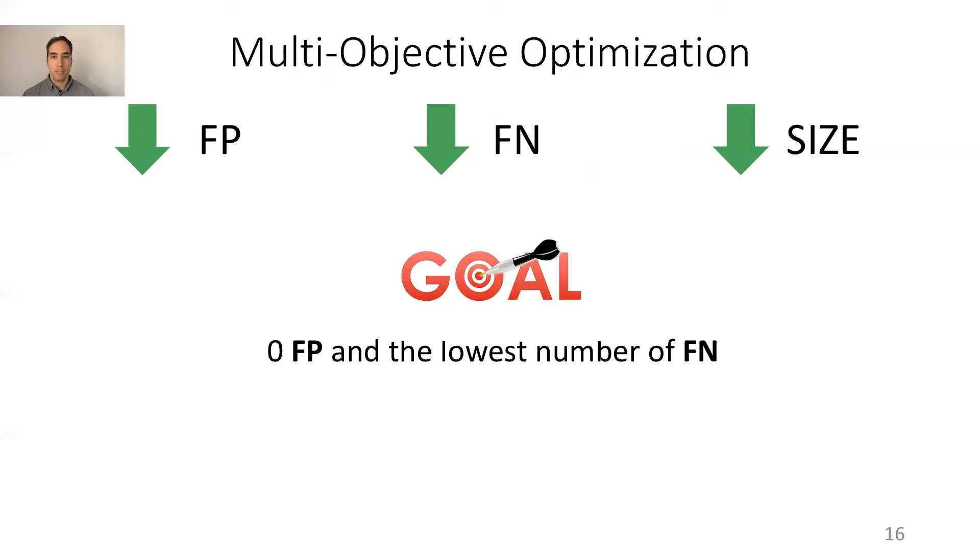For this reason, J-Assert adopts a search-based approach using genetic programming, formulating the problem as a multi-objective optimization problem with three competing objectives. First, reduce the number of false positives, false negatives and size. That's because assertions of small size are easier to understand and maintain.